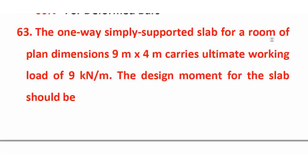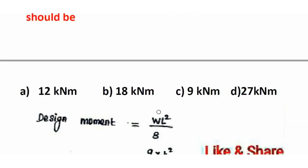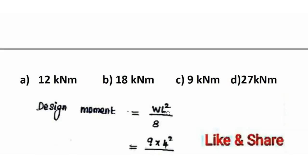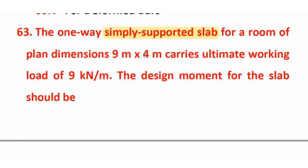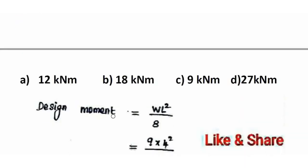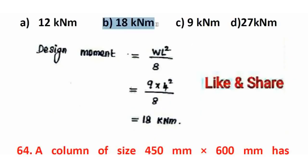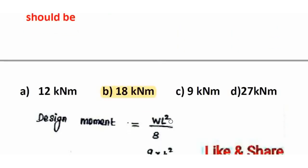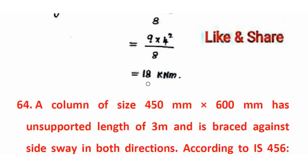Next question: A one-way simply supported slab for a room of plan dimension 9m × 4m carries an ultimate working load of 9 kN/m. The design moment for the slab? For a simply supported slab, design moment = WL²/8. The effective span for a one-way slab is the shorter span = 4m. Design moment = 9 × 4² / 8 = 18 kN·m/m. The right answer is 18 kN·m/m.